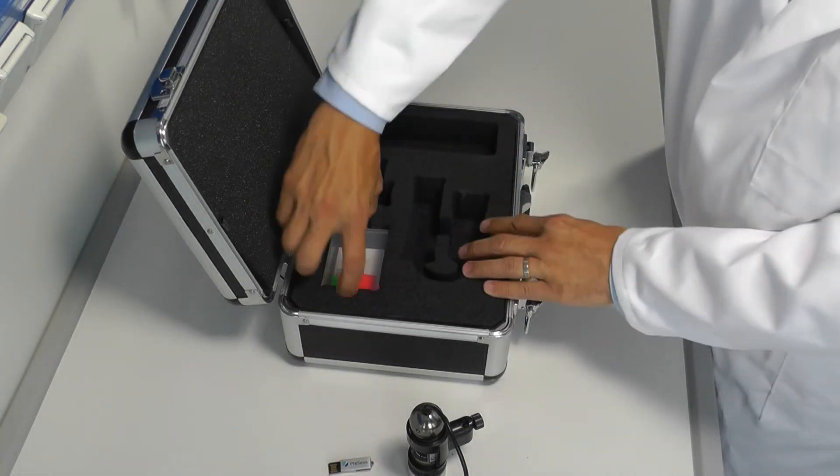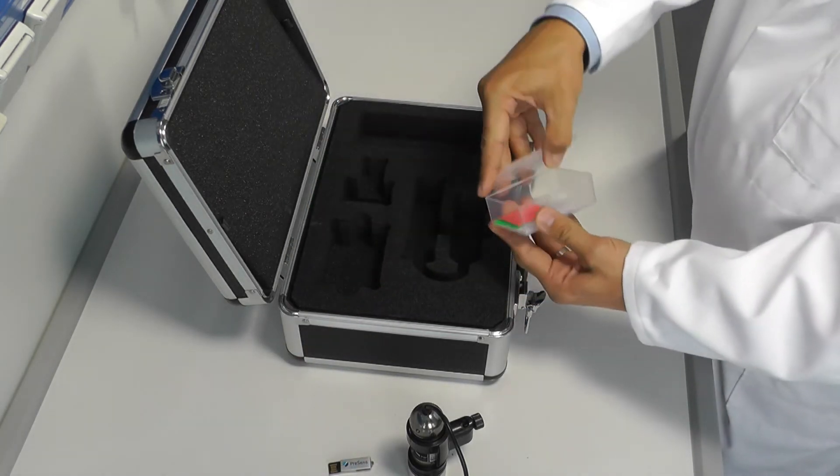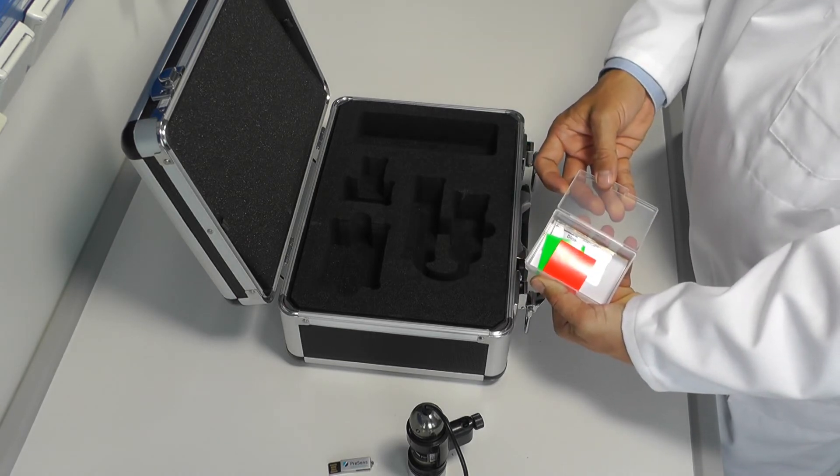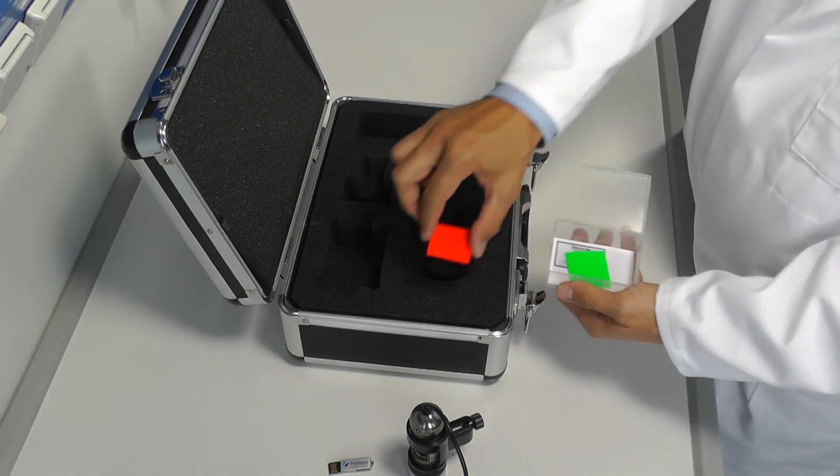A plastic box holds the smaller parts of the equipment. There are two fluorescent reference foils in red and green. These foils are not sensors.